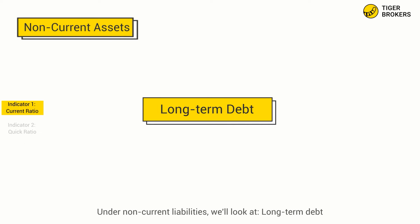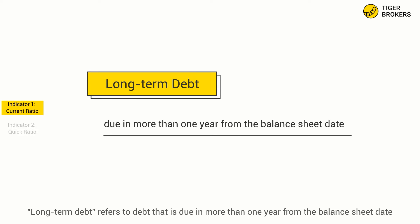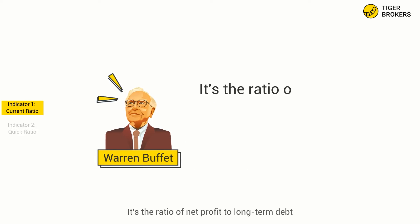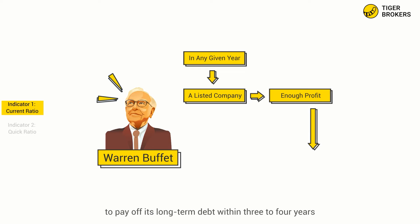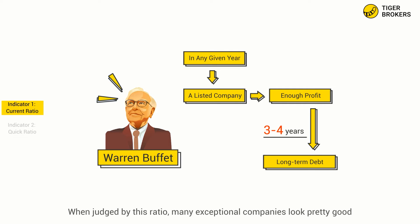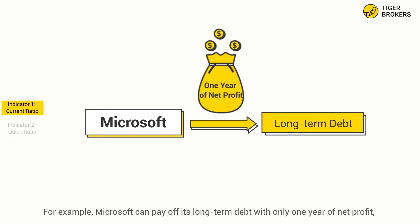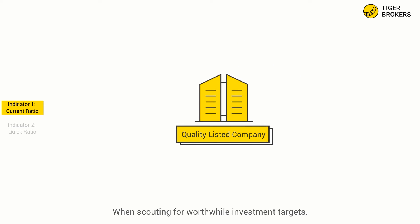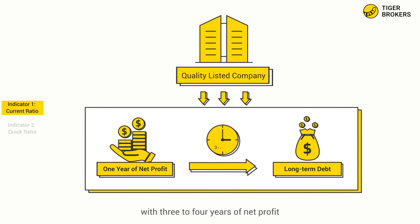Under non-current liabilities, we'll look at Long-term Debt, which refers to debt that is due in more than one year from the balance sheet date. Now I'm going to share with you a formula used by Warren Buffett — the ratio of net profit to long-term debt. Buffett believes that in any given year, a listed company should have made enough profit to pay off its long-term debt within 3 to 4 years. When judged by this ratio, many exceptional companies look pretty good. For example, Microsoft can pay off its long-term debt with only one year of net profit, while Apple's net profit can cover its long-term debt in two years. Warren Buffett makes it a rule that a company must be able to pay off its long-term debt with 3 to 4 years of net profit.